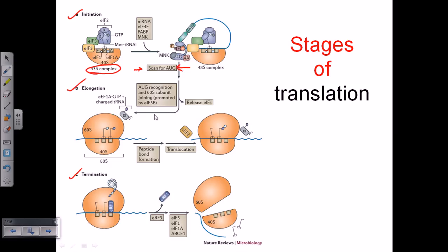The elongation phase is very similar to prokaryotes. There are two major stages: first, peptide bond formation between amino acid sequences carried by tRNA — tRNA brings amino acids that are attached one after another; second, translocation, which is the shifting of ribosomal subunits one codon in the 5' to 3' direction. The termination stage is extremely similar to prokaryotes, requiring release factor 1, 2, and 3, plus ribosome recycling factor, which disassembles the 60S subunit from the 40S subunit so everything is recycled.